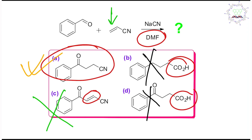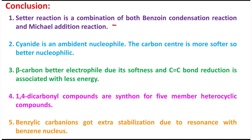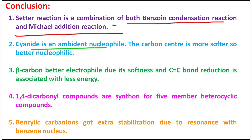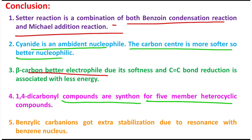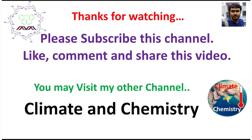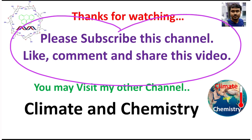This reaction we learned today is called the Stetter reaction. In conclusion: the Stetter reaction is a combination of benzoin condensation and Michael addition. Cyanide is an ambident nucleophile — the carbon of cyanide is softer, making it a better nucleophile. The beta carbon of acrylonitrile is the better electrophilic site due to softness. The 1,4-dicarbonyl compounds are synthons for five-membered heterocyclic compound preparation. The benzylic carbanion gets extra stabilization due to resonance with the benzene nucleus. I believe this video was useful — please help the channel grow. See you in the next video, thanks for watching, take care.